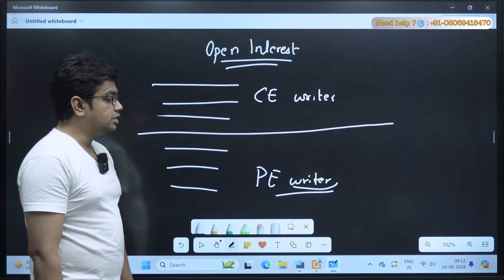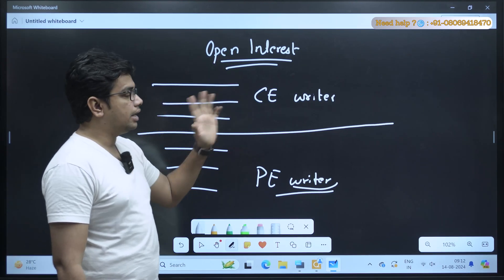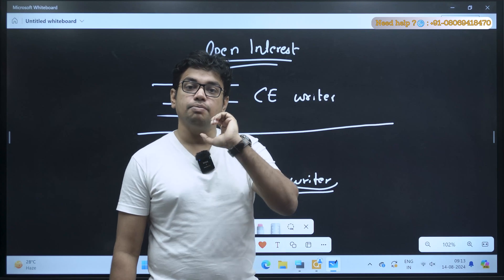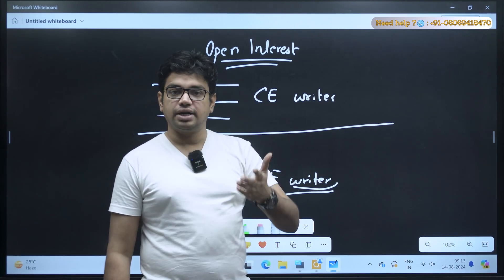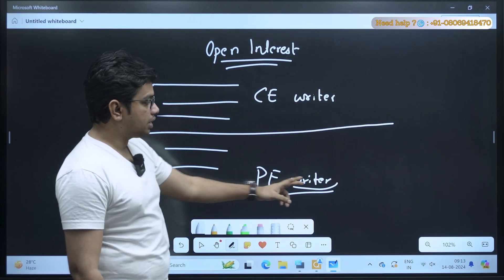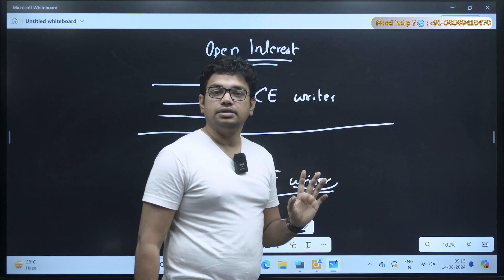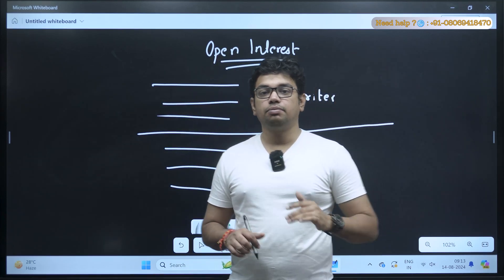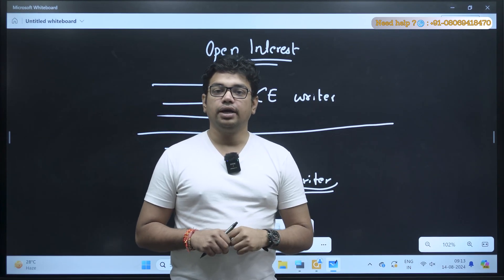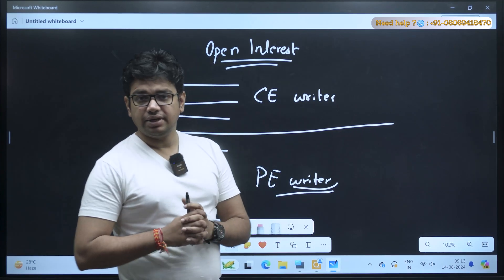But at which level should I take a look? Because at most levels you can see there are green bars and red bars. At a particular level where call writers are more as compared to put writers, that level will be considered resistance. And at a level where put writers are more, that will be support. Most of the time the price will respect this level and bounce back, and when price breaches this level it gives further returns.